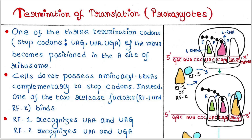This is the mRNA. The mRNA contains three kinds of termination codons: UAG, UAA, and UGA. They are also called stop codons.